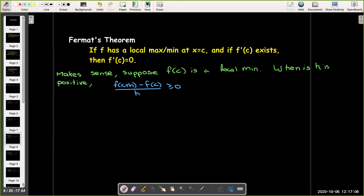Well, what does that tell us then? That says that the limit as h approaches 0 from the right of that difference quotient will always be greater than or equal to 0. And then that will say that f'(c) has to be greater than or equal to 0. That's when h is positive.